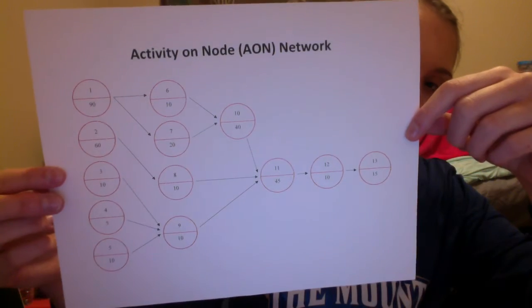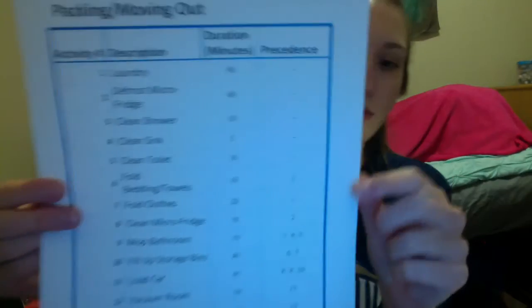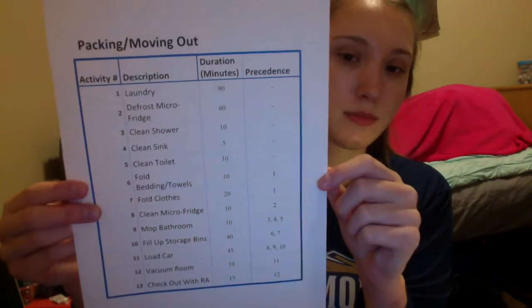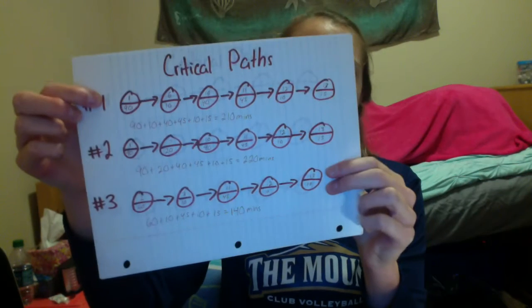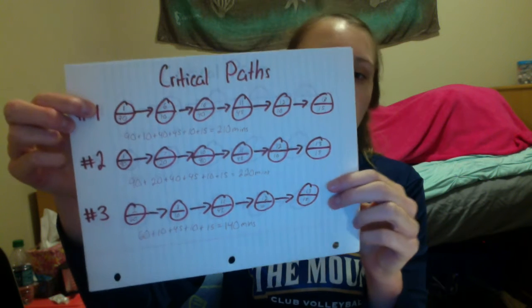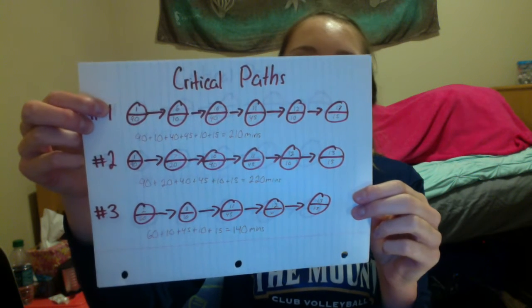Now that we have completed our AON network, based on this table we can find our critical path. To find the critical path, you must first list all network paths. Once we identify the network paths, we can then calculate the sum of the durations for each one. For path number 1, we have activities 1, 6, 10, 11, 12, and 13. Their durations add up to 220 minutes.